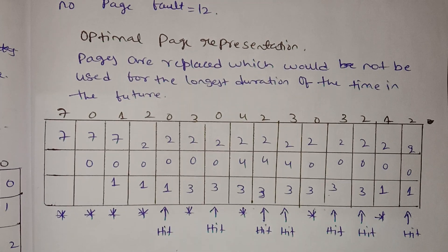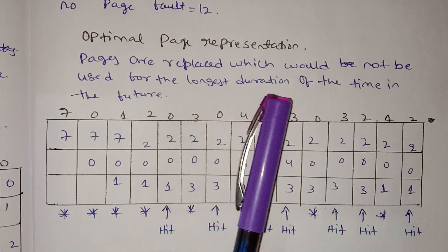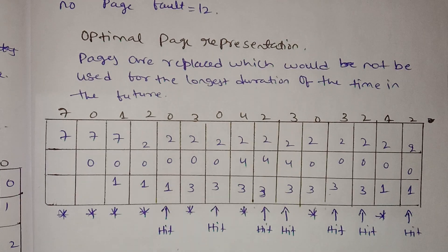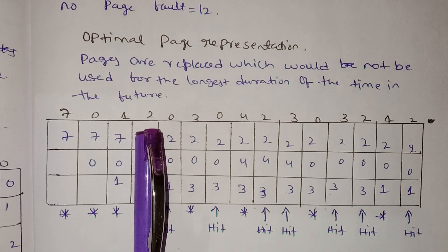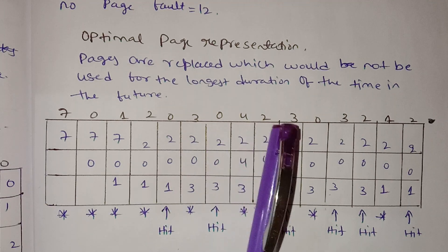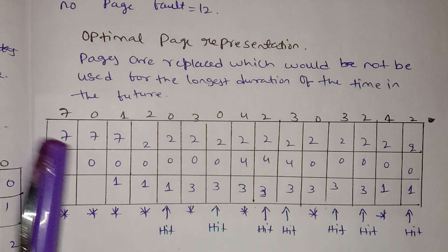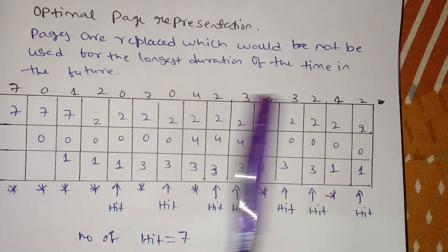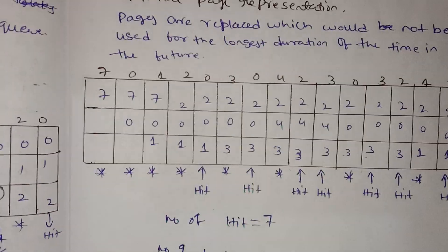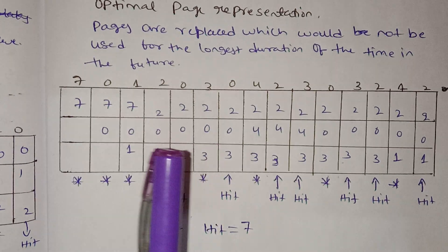Now for the Optimal page replacement algorithm. In this algorithm, pages are replaced which would not be used for the longest duration of time in the future. With the string 7, 0, 1, 2, 0, 3, 0, 4 and 3 frames: 7 enters, then 0 enters, then 1 enters — all page faults.